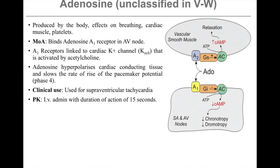While technically not in a class in the Vaughan-Williams system, adenosine is included in it. It is produced naturally by the body and has effects on breathing, cardiac muscles, and platelets. It binds to adenosine receptors — A1 receptors are present in the AV nodal cells and are linked to cardiac potassium channels activated by acetylcholine. Adenosine hyperpolarizes cardiac conductive tissue and slows the rate of rise of the pacemaker potential in phase 4. Clinically it is used for supraventricular tachycardia, given intravenously with a duration of action of about 15 seconds.